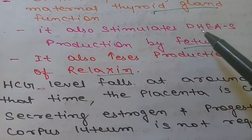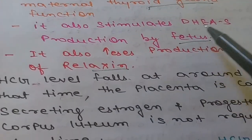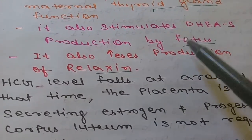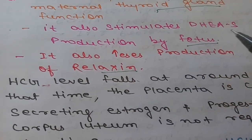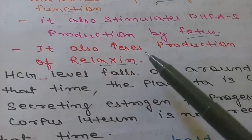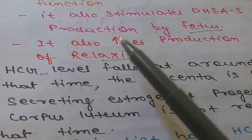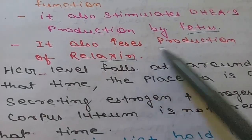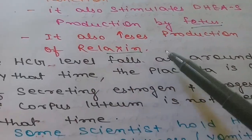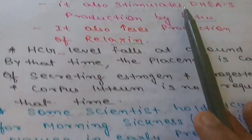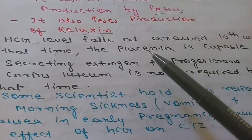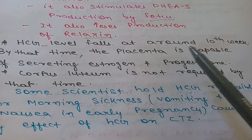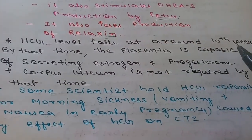The third function is that HCG stimulates the production of dehydroepiandrosterone sulfate (DHEAS) by the fetus, as discussed in the fetal-placental unit. The fourth function is the increased production of relaxin.